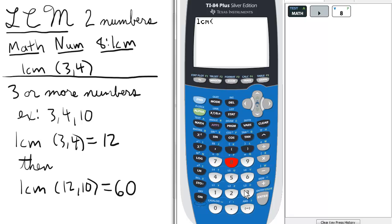Now, for the LCM of 3 and 4, we just press 3, then the comma, and then 4, Enter. So the LCM of 3 and 4 is 12.